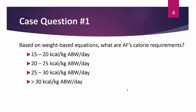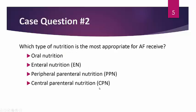Case question 1: based on weight-based equations, what are AF's calorie requirements? Is it 15 to 20 kcal per kilo actual body weight per day? 20 to 25 kcal/kg/day? 25 to 30 kcal/kg/day? Or greater than 30 kcal/kg/day? Case question 2: which type of nutrition is most appropriate for AF — oral nutrition, enteral nutrition (EN), peripheral parenteral nutrition (PPN), or central parenteral nutrition (CPN)?